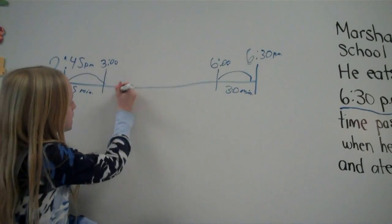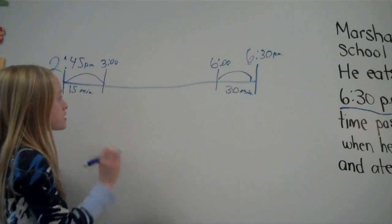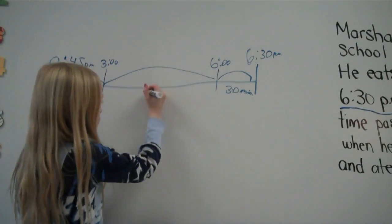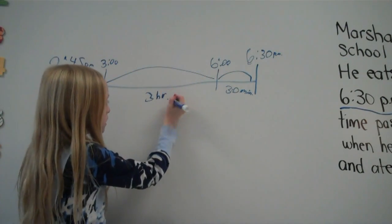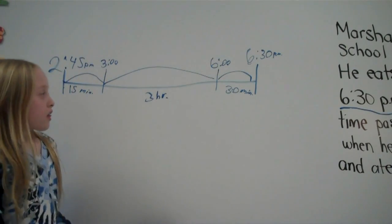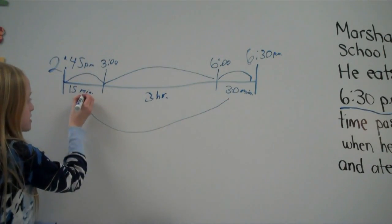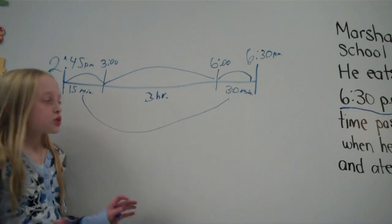Then we find out the hours of total, which is 3 hours. Then we have to add 30 minutes and 15 minutes together, which equals 45 minutes.